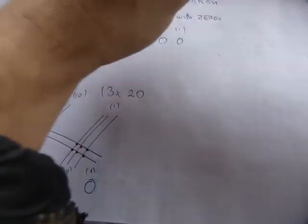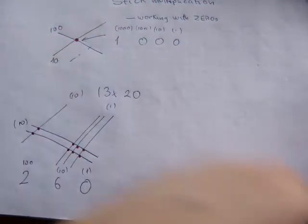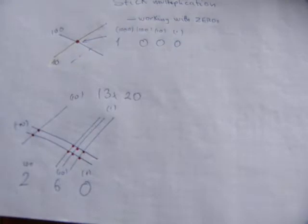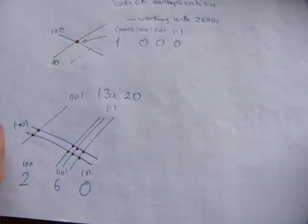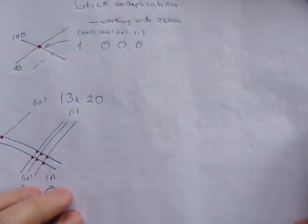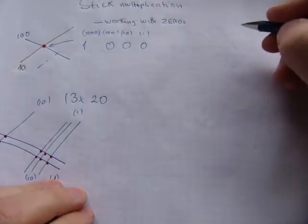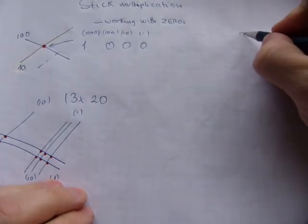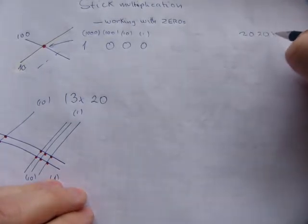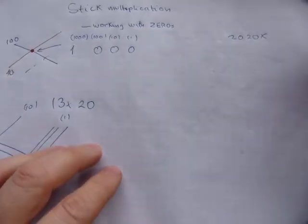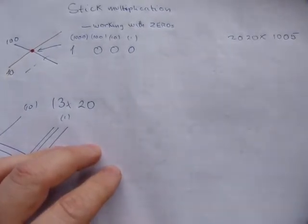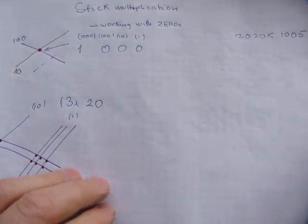How about a challenge? Something, how about a four digits with a four digit number? I'll try to leave that somewhere here so you see what's happening. How about two thousand and twenty times one thousand and five? How about that one?